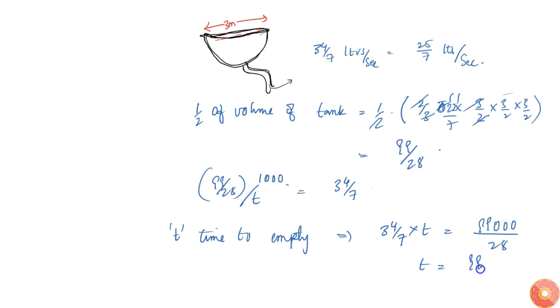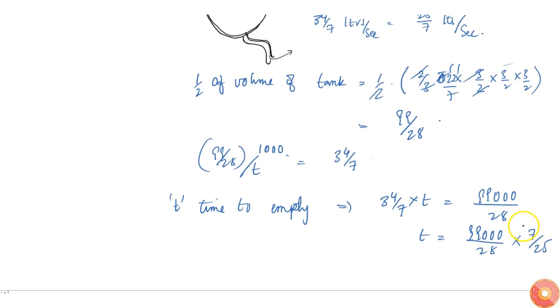From this I will get t is equal to 99,000/28 into 7/25. So if you calculate, 7 cancels this in 4 times, 4 into 500, so this is simply 990 seconds.